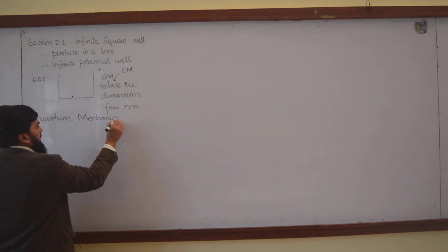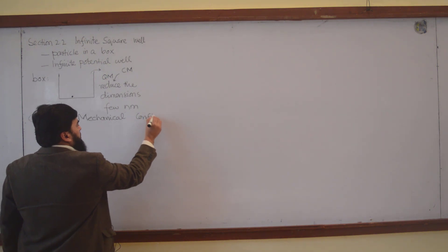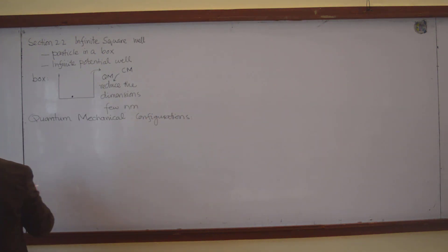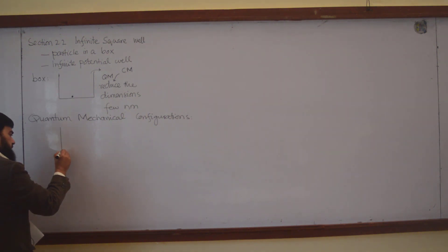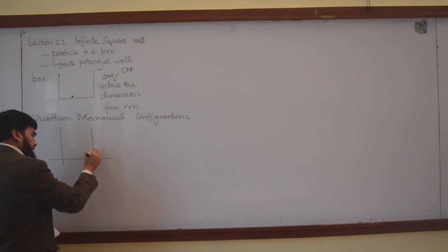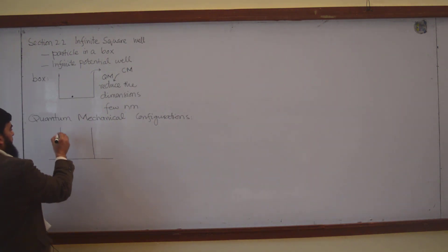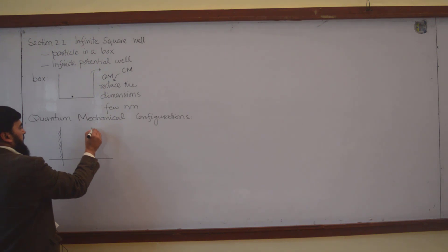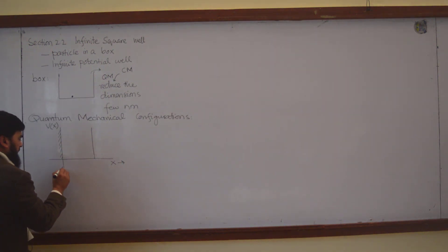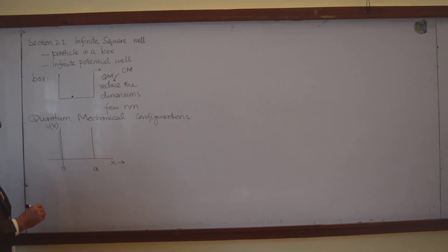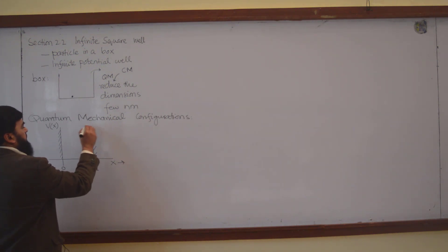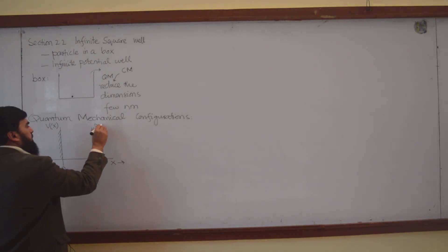We start with the quantum mechanical configuration. We define a particle that is inside a well — a box — where along one axis we have potential and along the other axis we have x. The box dimensions run from 0 to a. The walls of this box are at a very high potential, and we say that the potential is infinite.